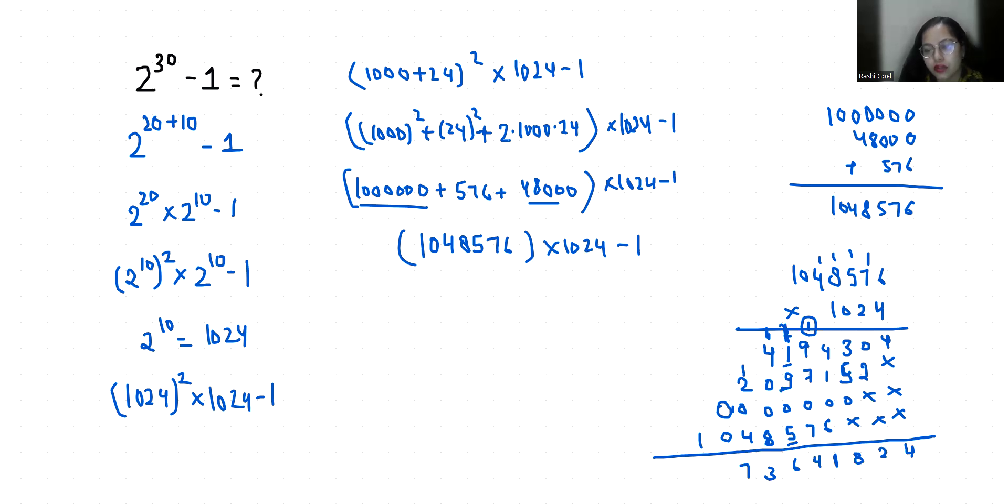So 1,073,641,824 minus 1 which equals 1,073,641,823.